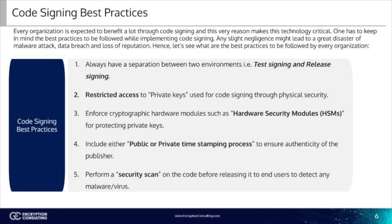One best practice is separation of environments: test signing and release signing. One of the important code signing practices is to set up a parallel environment for code signing infrastructure to sign test code with an internal test root CA. Internal test root CAs would provide test certificates for signing the code. This benefits the firm in two ways: limiting the exposure of actual private keys and code signing mechanisms, and providing an opportunity to test the signed code for functionality bugs and vulnerabilities.